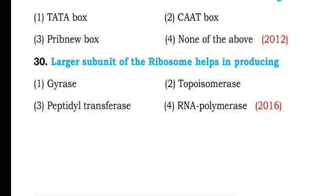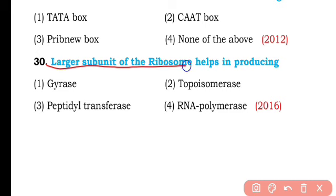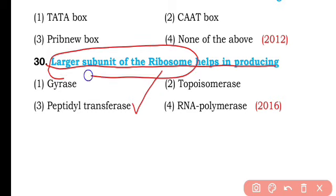Question number thirty. The larger subunit of the ribosome helps in producing: gyrase, topoisomerase, peptidyl transferase, or RNA polymerase? So the correct answer is option three — the enzyme peptidyl transferase is produced from the larger subunit of ribosomes.